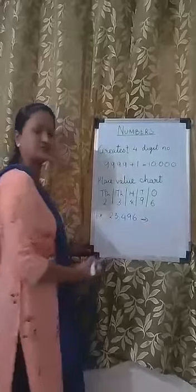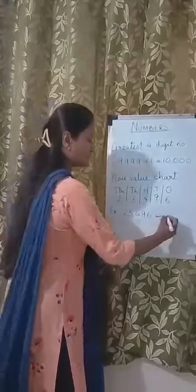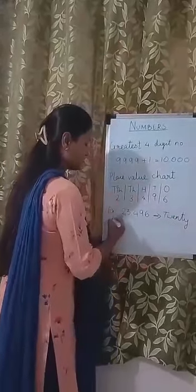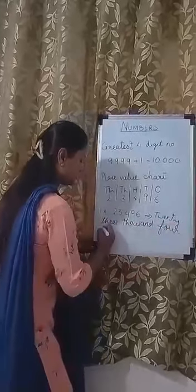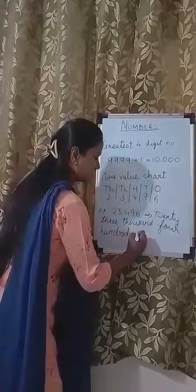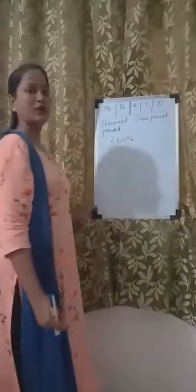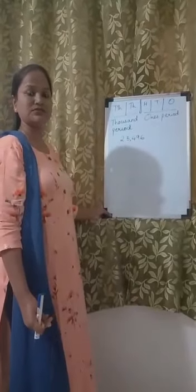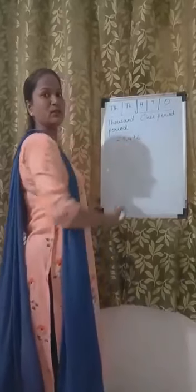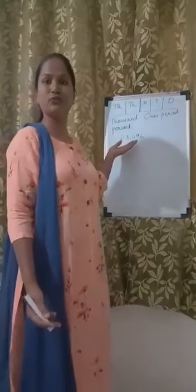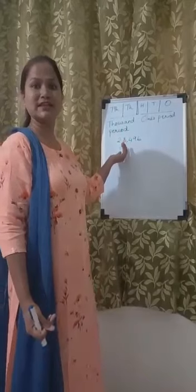So I have got the number 23,496. I can also write the number name for this number. The place value — 1's, 10's, 100's, 1,000 and 10,000 — is divided into 2 periods. To divide these 2 periods, we add a comma in the number. For example, I have the number 23,496. The comma here shows that the number is divided into 2 periods. The comma also helps me to understand and read the number easily.